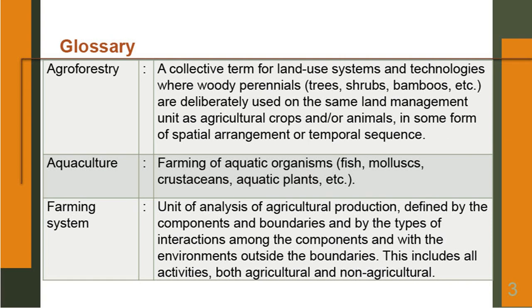Aquaculture: farming of aquatic organisms — may be fish, may be mollusks or crustaceans, aquatic plants, etcetera. Farming system: unit of analysis of agricultural production defined by the components and boundaries and by the types of interactions among the components and with the environments outside the boundaries. This includes all activities both agricultural and non-agricultural.